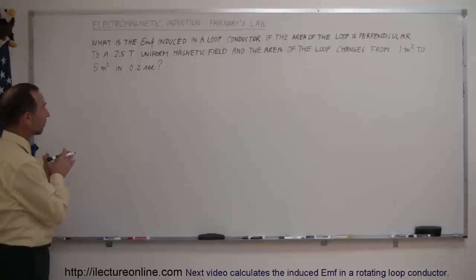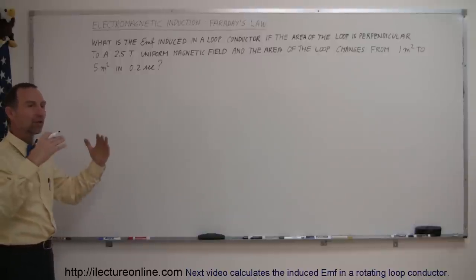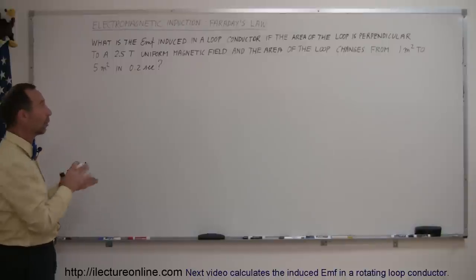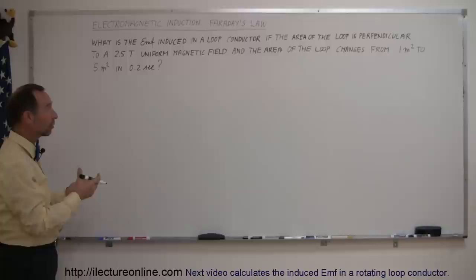In this case, the strength of the magnetic field is staying uniform and constant. It's the area of the loop that is changing. It changes from an area of one square meter to an area of five square meters in 0.2 seconds. If the area changes and the magnetic field stays the same, that means the flux through the loop is changing as well. If the area is increasing, then the flux through the loop is increasing, and if the flux through the loop is increasing, then there must be an EMF induced.